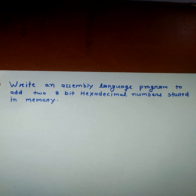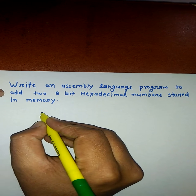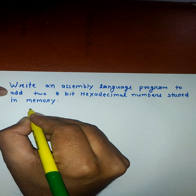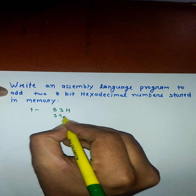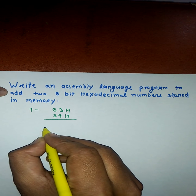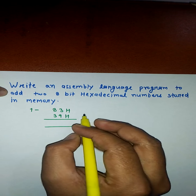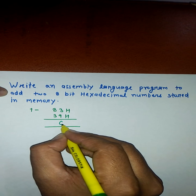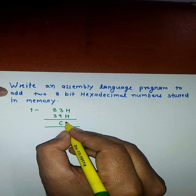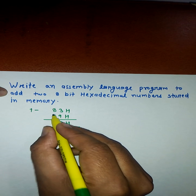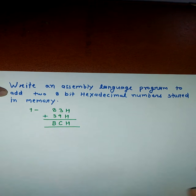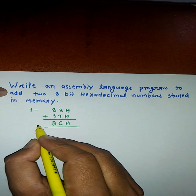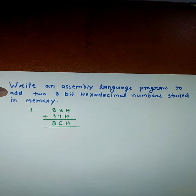There may be two conditions. The first condition is when we take two numbers such as 83H and 39H, and after summation we will not get any carry. 9 plus 3 equals 12, which is C in hexadecimal. 8 plus 3 equals 11, which is B. So the addition of 83H and 39H will produce BCH, and no carry is generated.